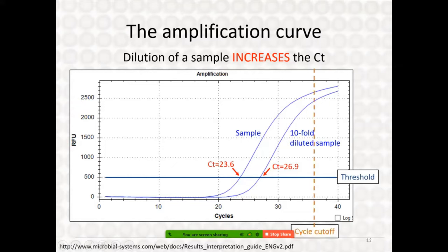There is a cycle cutoff — the vertical dotted line — which is the point at which you determine whether your sample is positive or negative for the target of interest. There tends to be a lot of confusion between the word 'threshold' and the word 'cutoff.' These are two very different concepts to keep in mind when evaluating whether a real-time assay has performed appropriately.